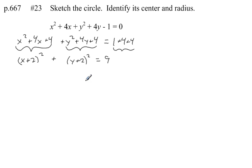So that's our standard form of a circle. The center is at negative 2, negative 2, and the radius is 3. Let's write that: center is at negative 2, negative 2. The radius of this circle is 3 units.